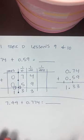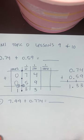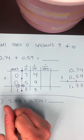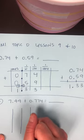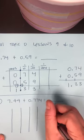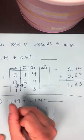So our next one is 7.44 plus 0.774. Alright, so this one is different than the ones we've done before. I want you to start thinking about how it's different. What do you notice in these two numbers as you're putting them on your place value chart? How is this different from any of the numbers we've added before?